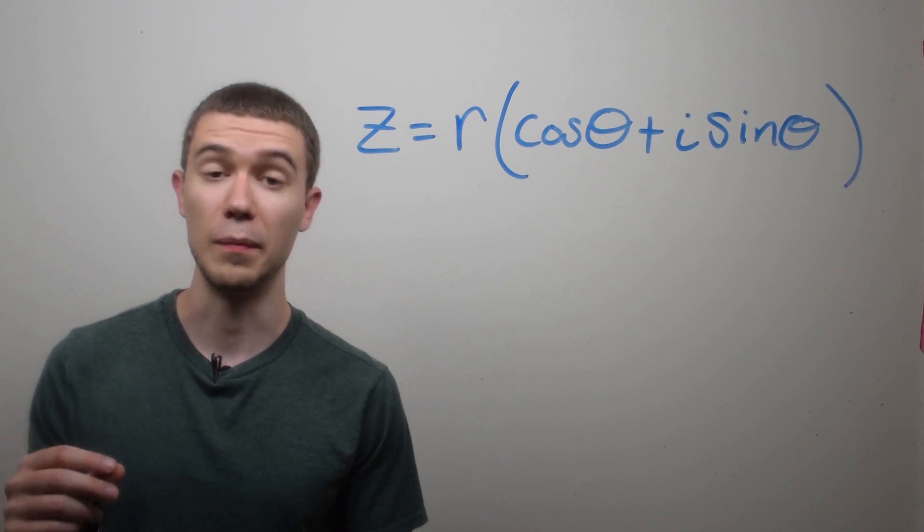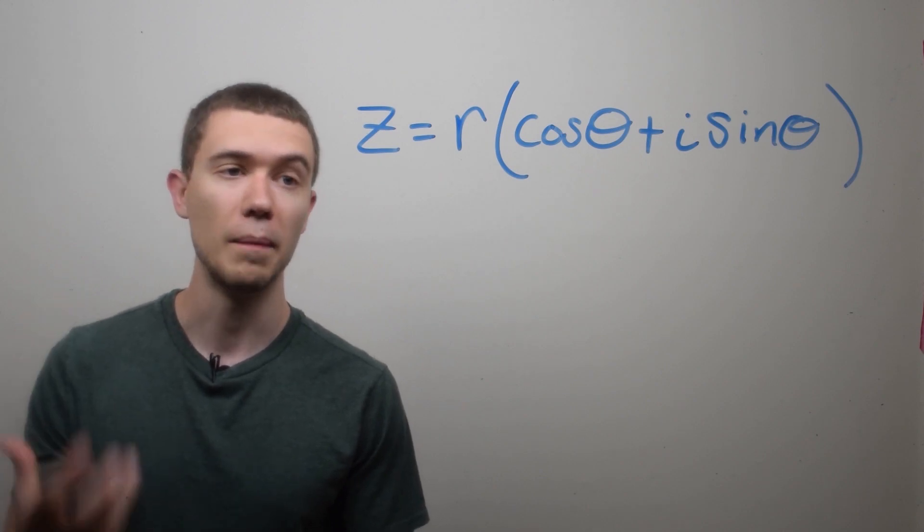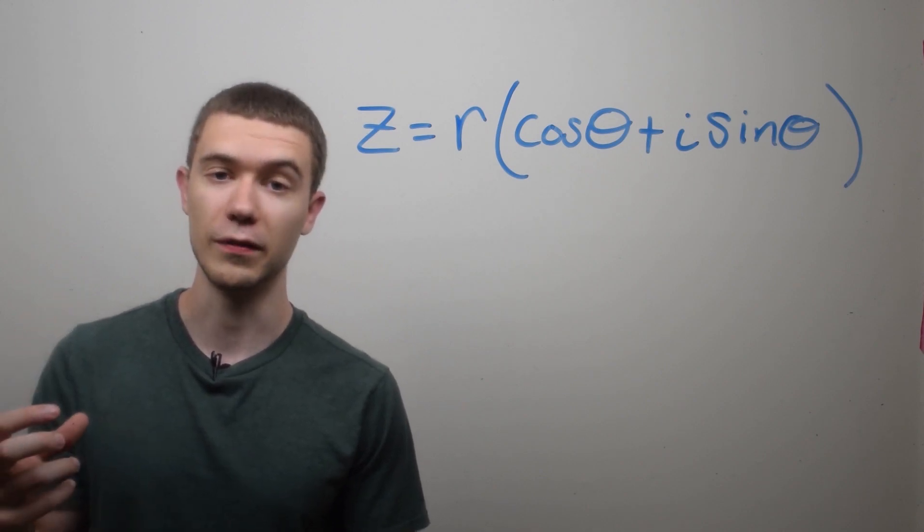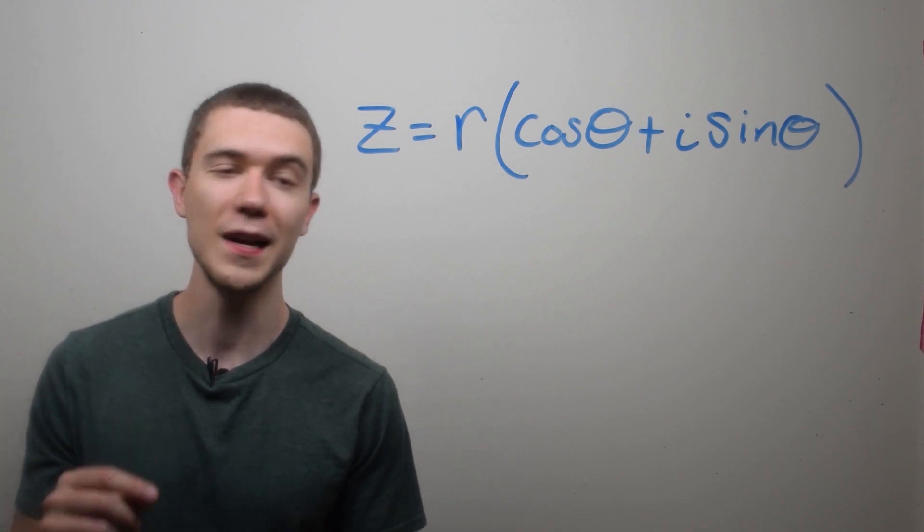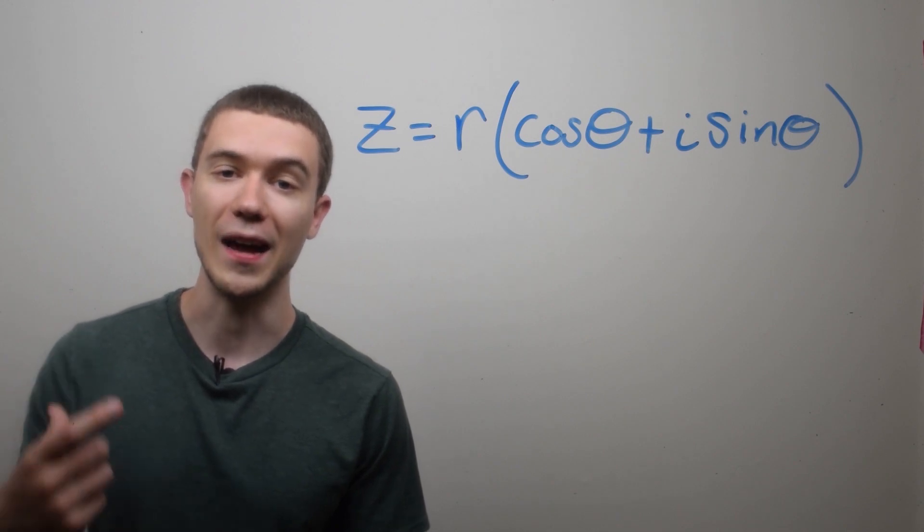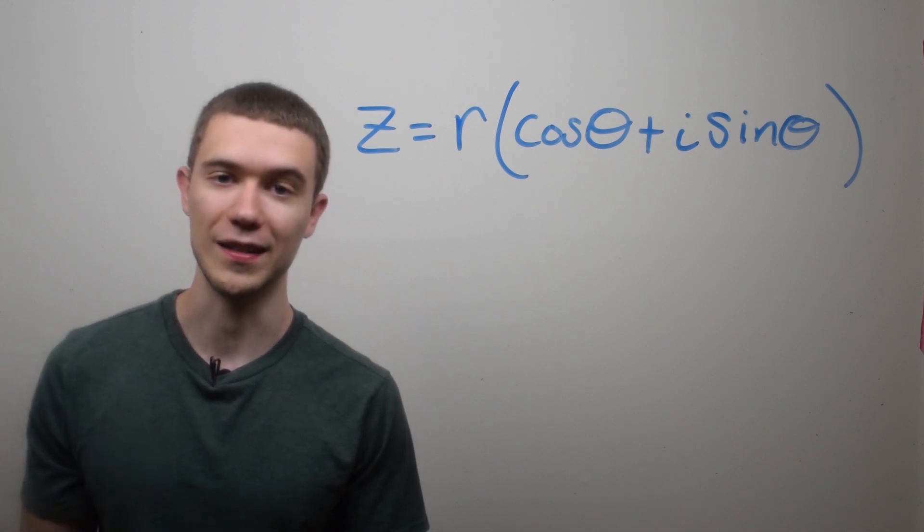Remember that every complex number can be represented in its polar form by r, which is the modulus of the complex number, times the quantity cosine theta plus i sine theta, where theta is the argument, the angle that the vector makes with the x-axis.